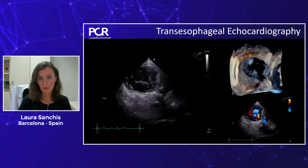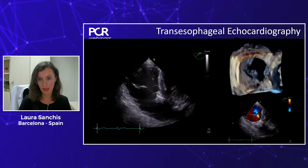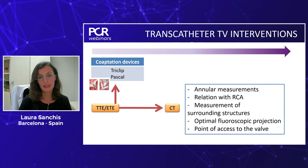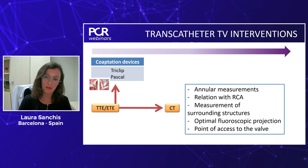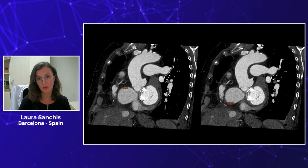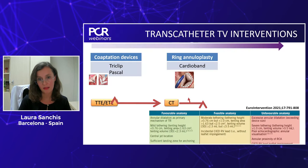Sometimes we have patients — for example, a four-leaflet patient with a big gap — where edge-to-edge therapy is not a good option. In this case, we can run a CT to get nice measurements of surrounding structures and the relation with the right coronary artery. With CT, it's easy to measure the annulus and evaluate suitability for Cardioband percutaneous annuloplasty. Good planification is necessary using dedicated software, but sometimes the right coronary artery is too close to the annulus, making annuloplasty not an option.